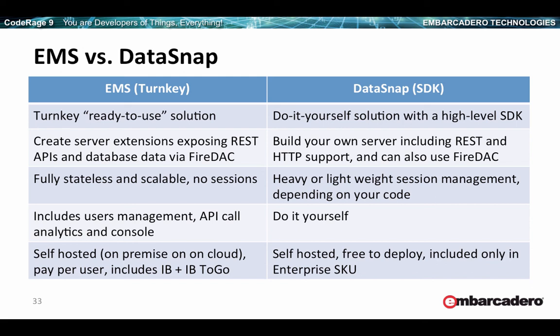EMS includes user management, API call analytics, and the analytics console — things you would write yourself using the DataSnap SDK. Both EMS and DataSnap are solutions you host yourself. One difference: DataSnap is self-hosted, free to deploy, only in the enterprise SKU; whereas EMS is also available in the client-server pack of professional, is pay-per-user, and includes Interbase Server and Interbase2Go licenses.